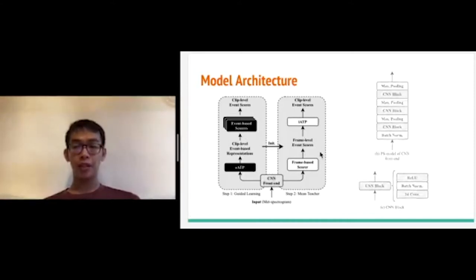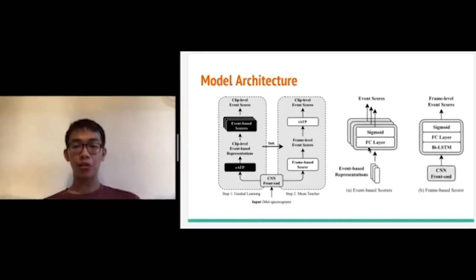And here are the structures of the event-based classifiers and frame-based classifiers. The former is simply a fully connected layer, and the latter is a bidirectional RNN layer plus a fully connected layer. The outputs of both classifiers then will pass a sigmoid layer, so the final scores are between 0 and 1.